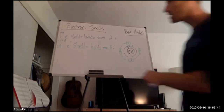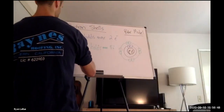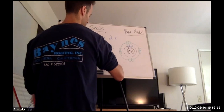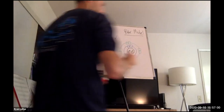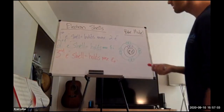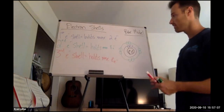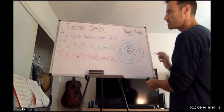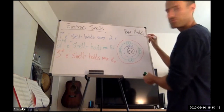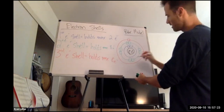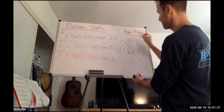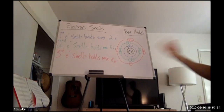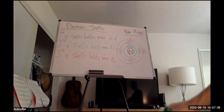Our third shell also holds a maximum of eight electrons. I'm going to say I have six to work with now, and going one at a time: one, two, three, four, five, six. I want you to pay attention to why the one-at-a-time thing is so important when we practice drawing Bohr models for actual atoms, not just a template.